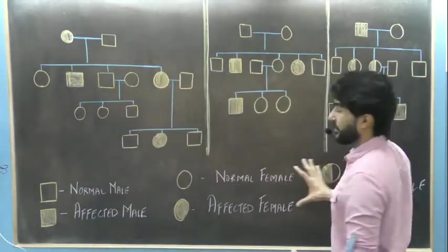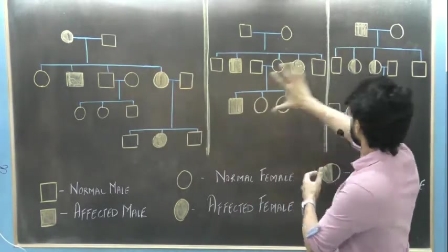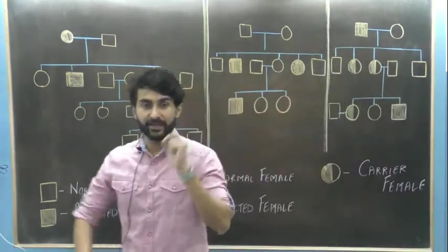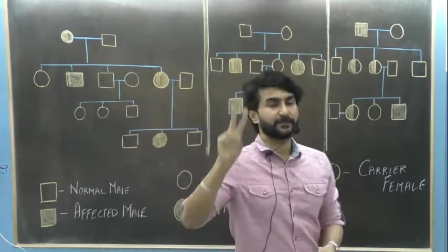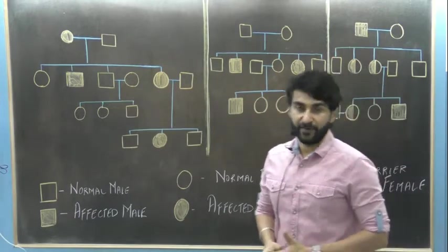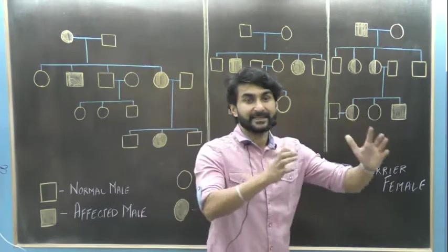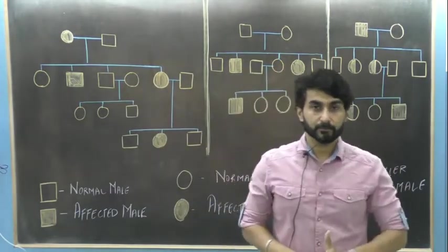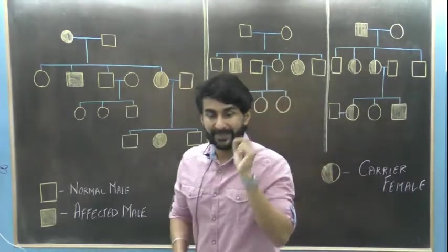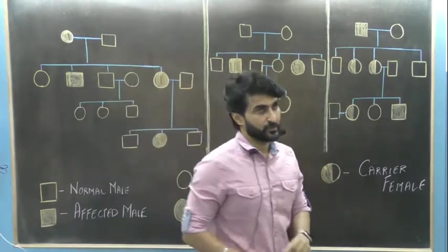These are the symbols commonly used in pedigree charts. There are basically three different types of pedigree charts which can be asked in your MCQs. There are two steps to this identification process. The first is to identify whether it is an autosomal disorder or whether it is a sex chromosomal disorder.